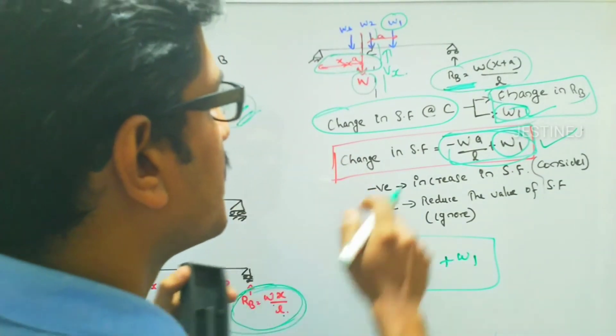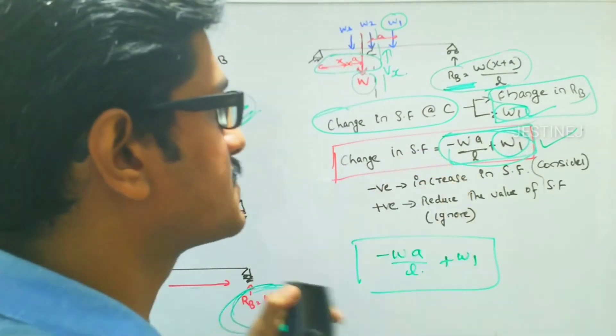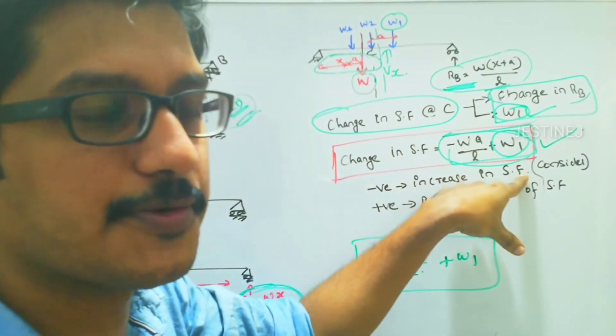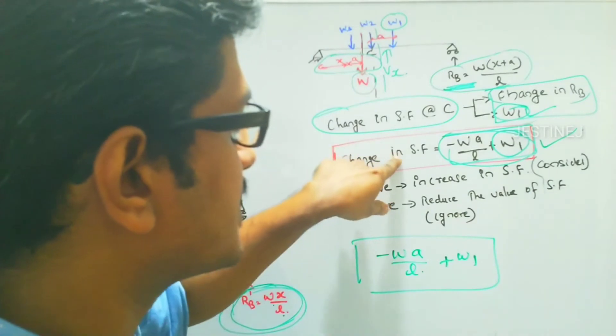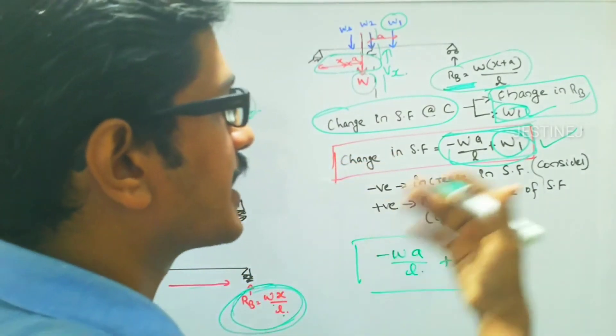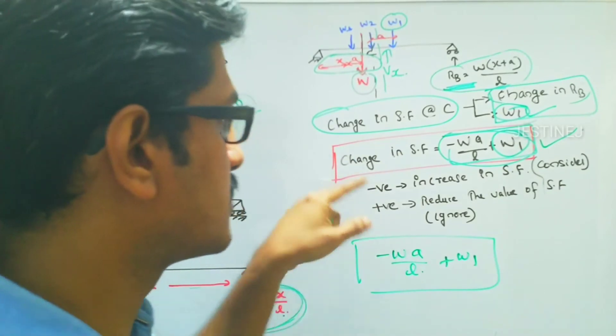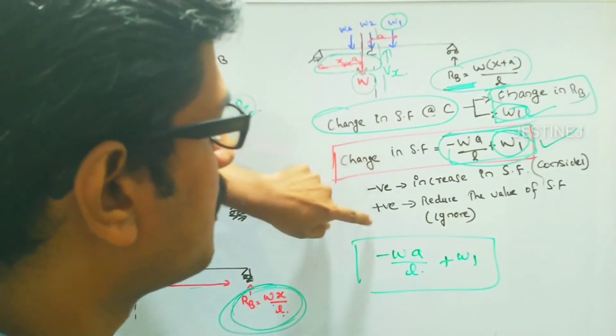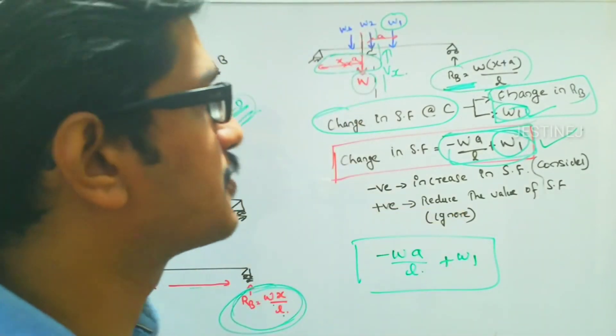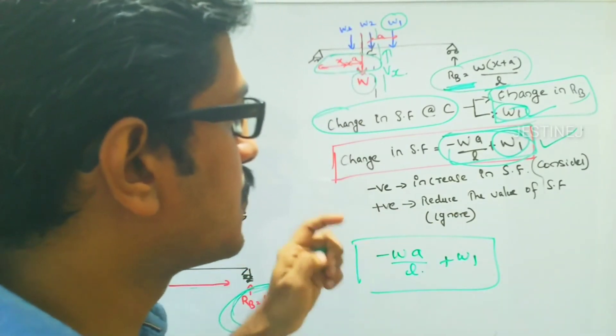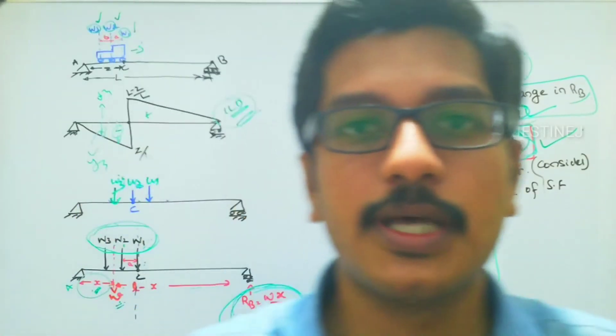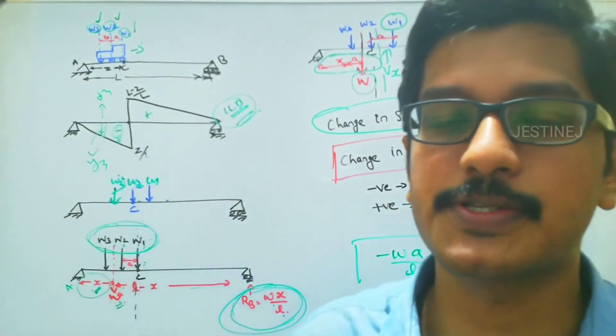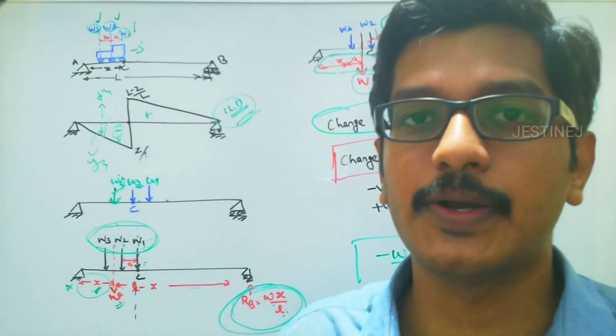And also, if the value in this change in shear force gives negative value, it means the increase in shear force. And if the value in the change in shear force gives positive value here, you should not consider when this W is acting at the point. If you get a positive value, then you can ignore the situation. So this is the condition for finding out the maximum shear force at point C when a concentrated load is acting over the beam.